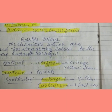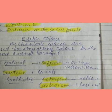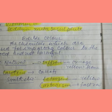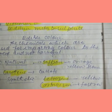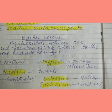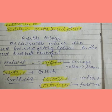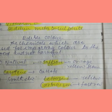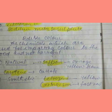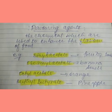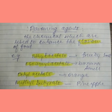Next, we have edible colors — chemicals used for imparting color to food that are not harmful. There are two types: natural and synthetic. Natural examples include saffron (orange-yellow color) and carotene found in carrots. Synthetic examples include tartrazine (yellow color) and fast red.